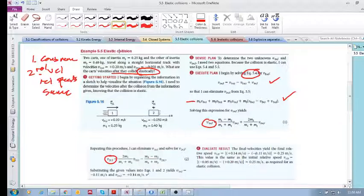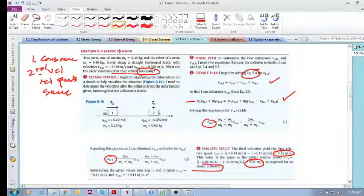Then if you go and look at the relative speeds, you'll see the final one is 0.25 and the initial relative speed is 0.25, which means indeed we have an elastic collision. See you in the next one.